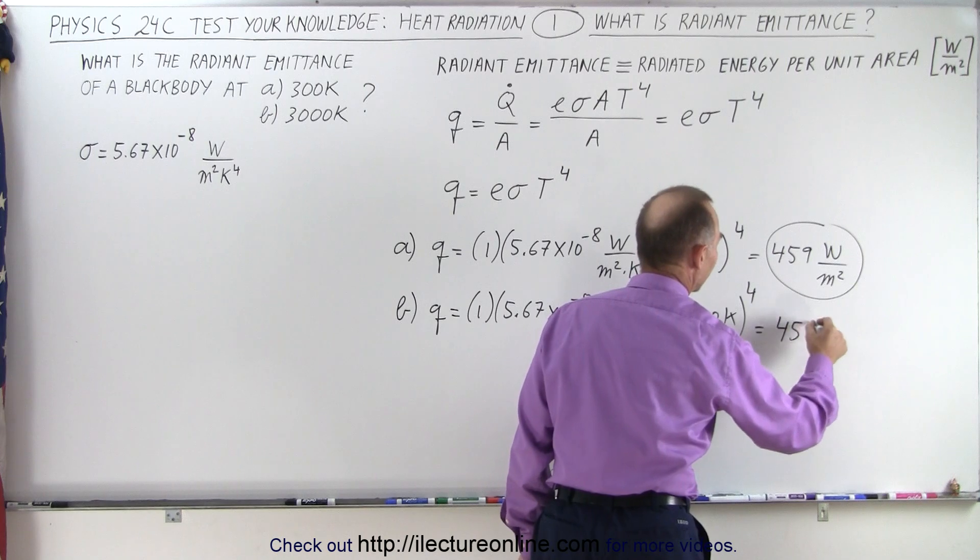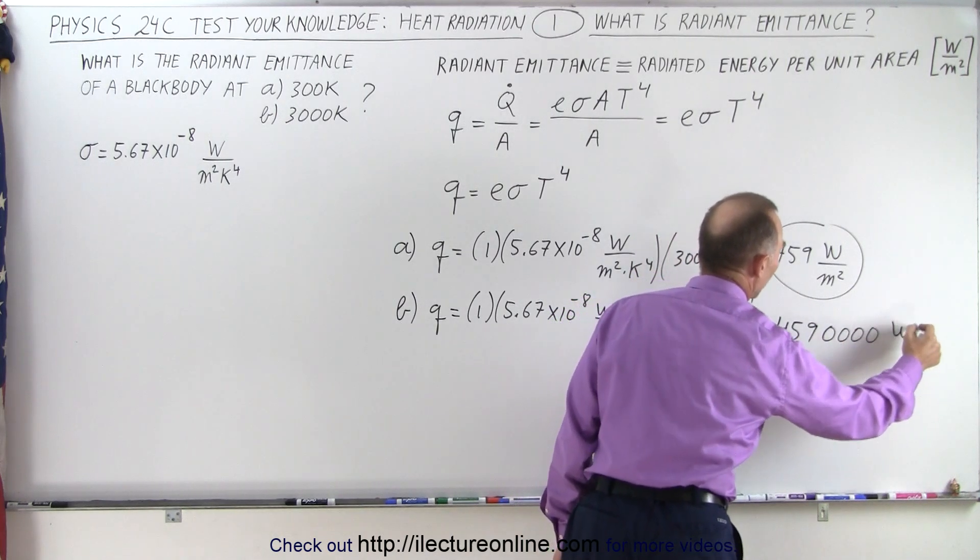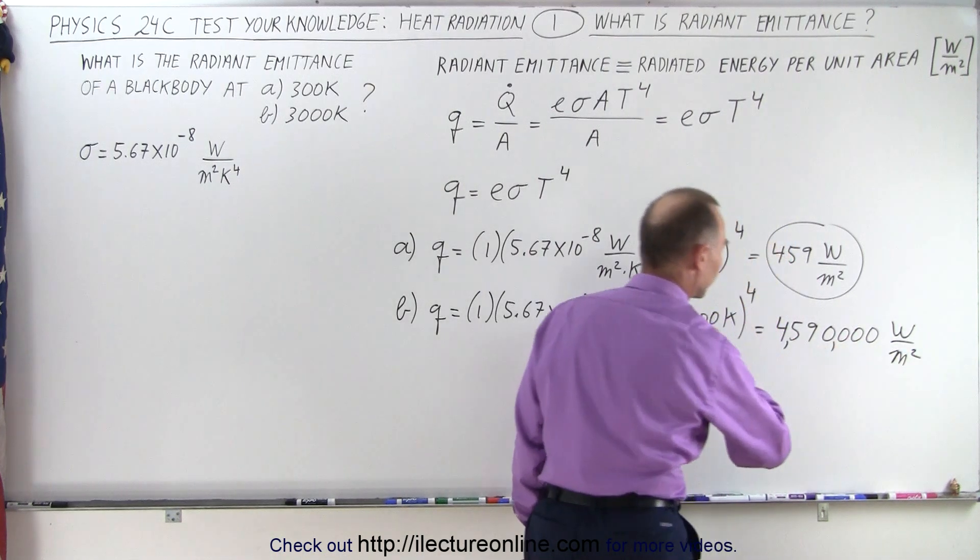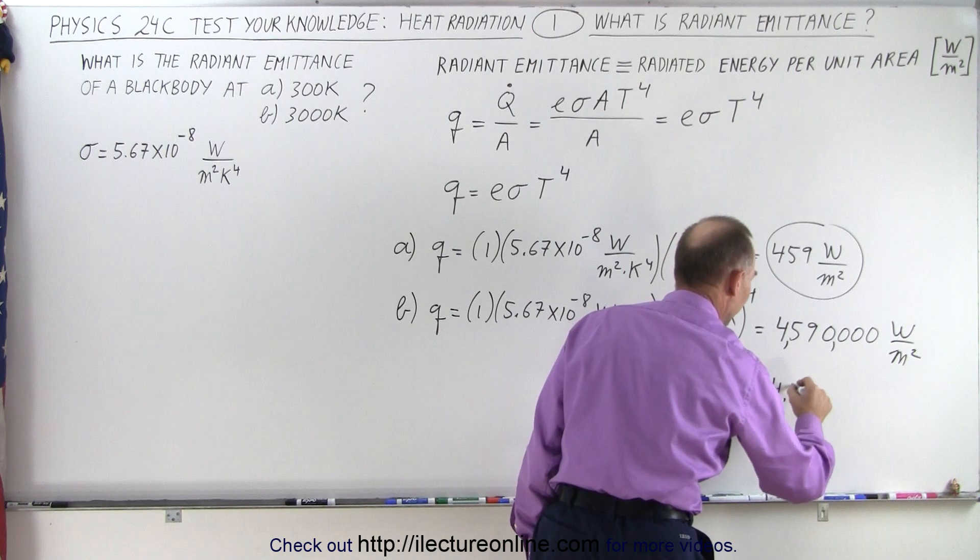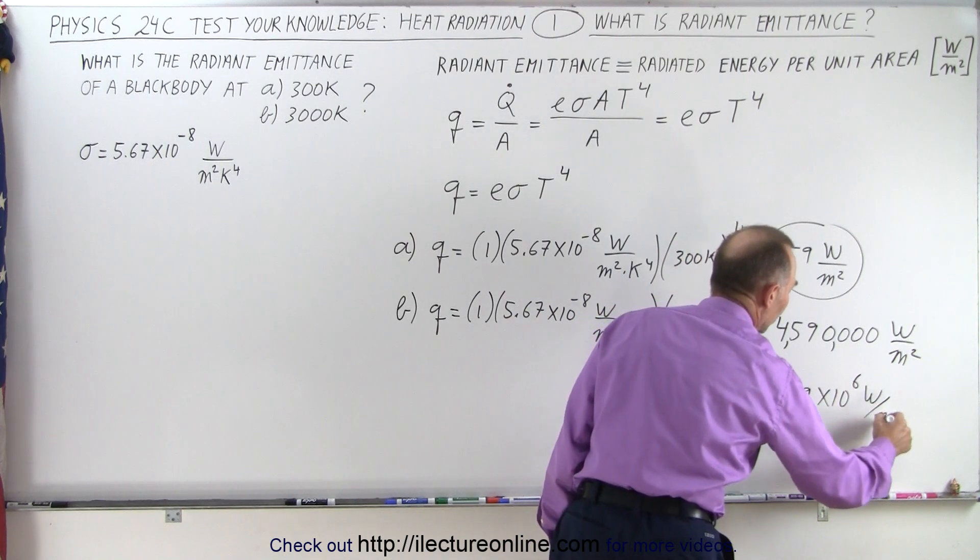So this would be equal to 459 with 1, 2, 3, 4 zeros watts per square meter. And notice that if we put some decimal places there, that would be equal to 4.59 times 10 to the sixth watts per square meter.